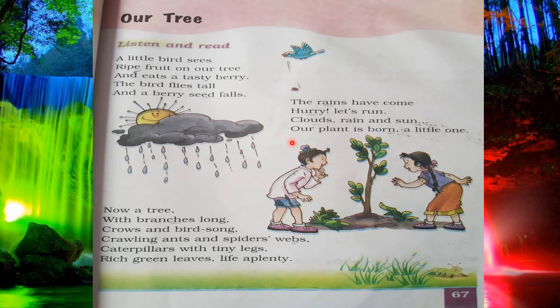Yesterday you understood this story. This story is about a tree — how a small seed, a little seed, becomes a tree. What is the process of a tree becoming a tree? We also understood that a tree is very useful for all of us, for birds, for insects, for animals. It gives us many things like flowers, fruits, wood, and different kinds of things.